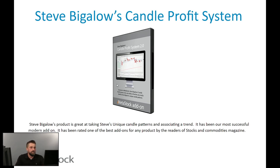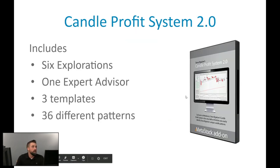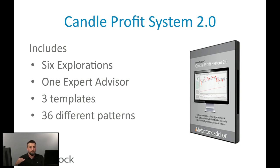One thing I really like about Bigelow's product is that he uses a lot of multi-day patterns. JCPR is a faster trading system — you can get more signals more quickly. With Steve Bigelow's, you'll get a lot of multi-day patterns. The CPS 2.0 system comes with six explorations, one expert advisor, and three different templates — one for stocks and equities, and with version 2.0 he also released a template for futures traders. It also has over 36 different patterns.